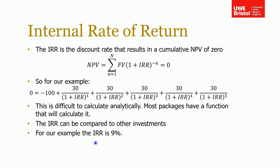The last metric is the internal rate of return (IRR), which is linked to NPV. The IRR is the discount rate that would result in a cumulative net present value of zero. For our example, with 6% we ended up with an NPV profit of about 26 million — but what discount rate would cause us to break even? Mathematically: NPV = 0 = -100 + 30/(1+IRR)^1 + 30/(1+IRR)^2 and so on.